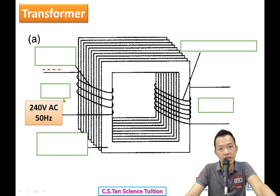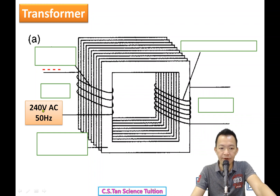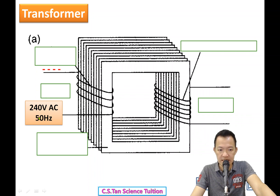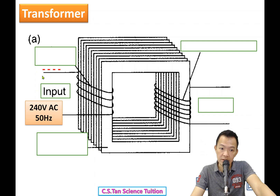A transformer must have an input. For Malaysia, the input is always 240 volts AC, 50 Hz from TNB — no matter who you are. By the way, 50 Hz means the electric current alternates 50 times per second — positive, negative, positive, negative — 50 cycles in one second.